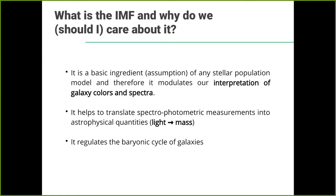The second point is related to the first but also important: the IMF, particularly for galaxies where you cannot resolve individual stars, lets you go from light to mass. It lets you do astrophysics. Basically any mass measurement you can get from a galaxy — the star formation rate, the stellar mass — every time you measure mass from the light of a galaxy based on photometry, there is an assumption on the IMF.